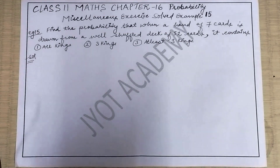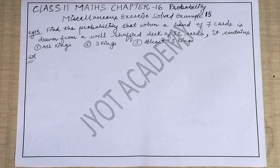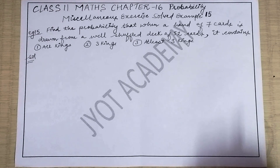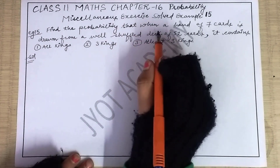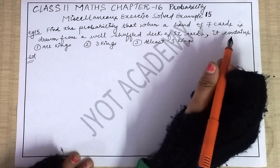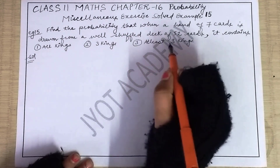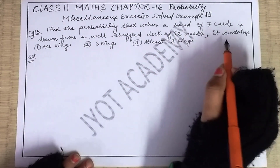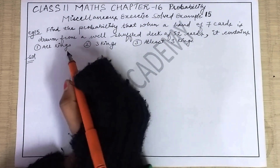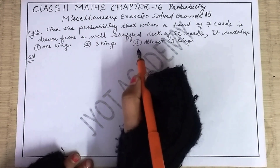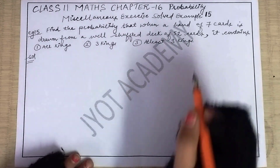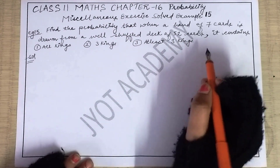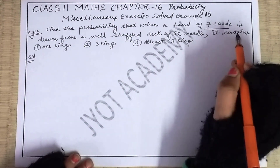Hello students, welcome back to my YouTube channel. Today we are continuing miscellaneous solved examples for Chapter 16. Let's see Example 15: Find the probability that when a hand of seven cards is drawn from a well-shuffled deck of 52 cards, it contains (1) all kings, (2) three kings, and (3) at least three kings.